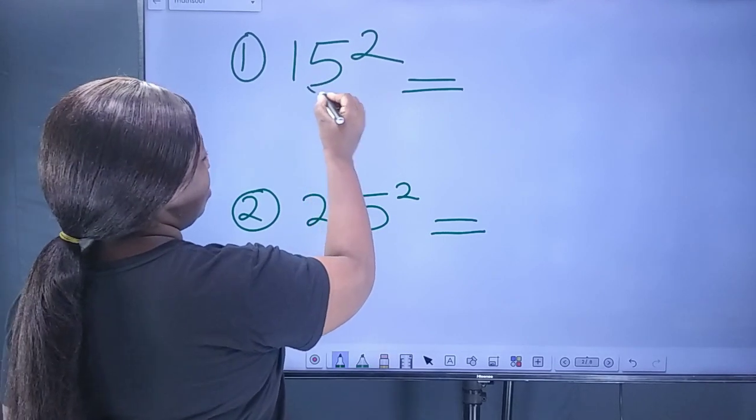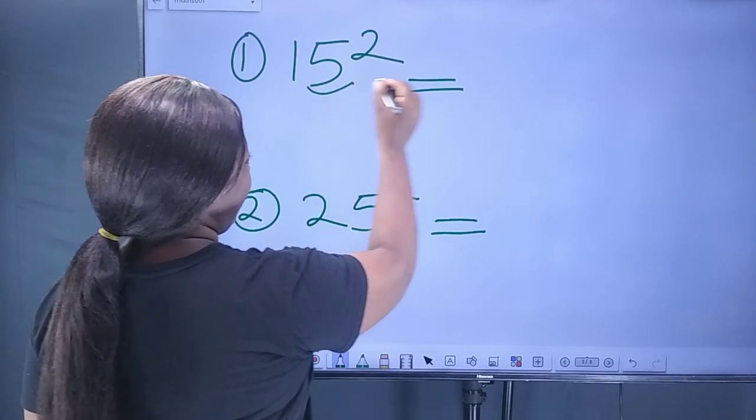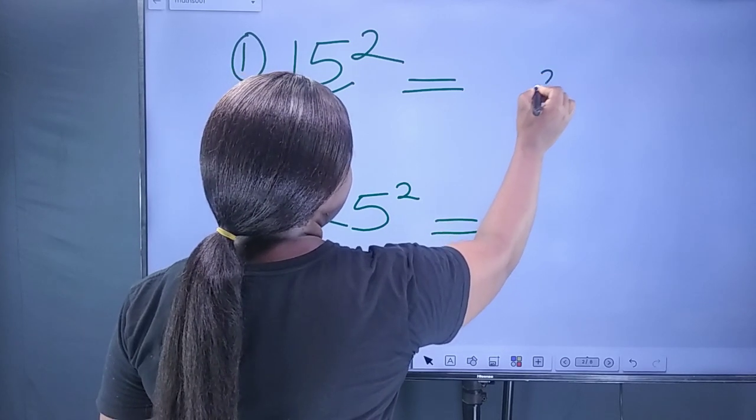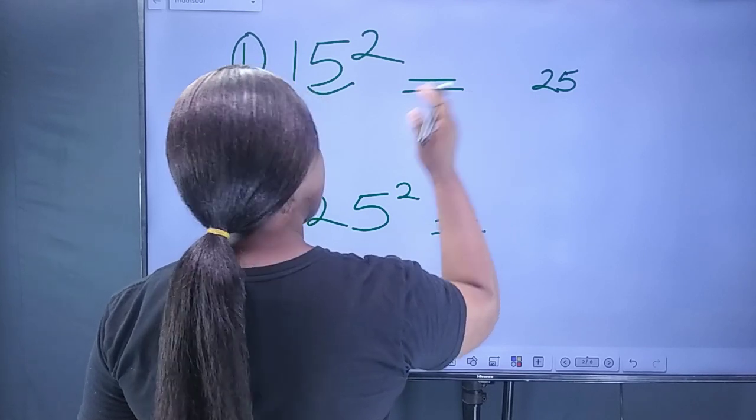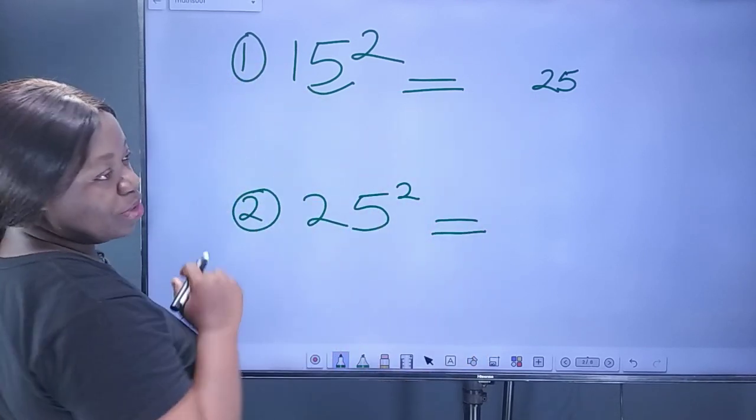The last digit here is 5. So, what is the square of 5? The square of 5 is 25. Write down 25 on your right side. Leaving a little space on your left side. That's the first step.